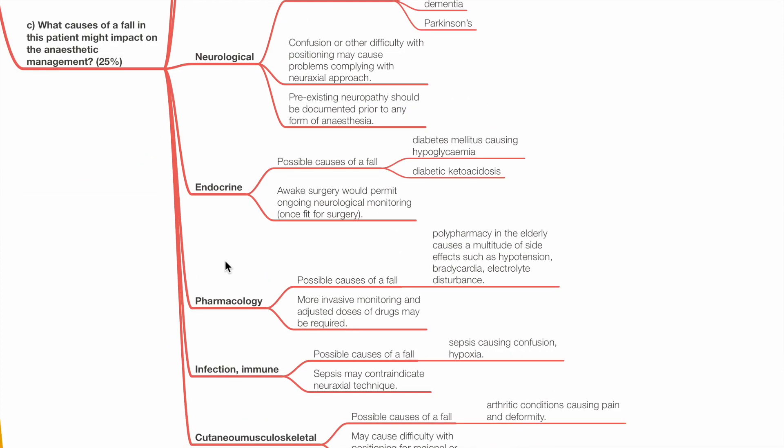Possible endocrine causes of a fall includes diabetes mellitus, leading to hypoglycemia and diabetic ketoacidosis. Awake surgery would permit ongoing neurological monitoring once fit for surgery.